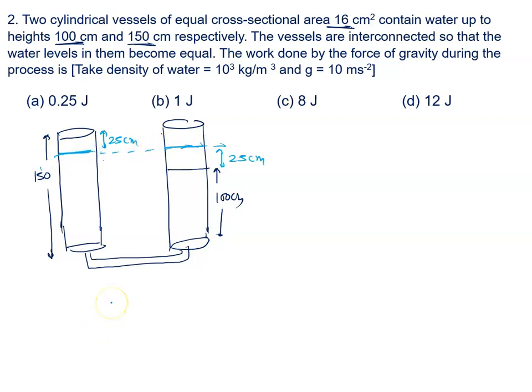Now we have to calculate the work done by the force of gravity. Gravity is doing positive work. We all know very well, gravity is doing positive work because this water was initially at 150, now it is coming to 125. Water level is downing. It means displacement is along the direction of gravity. So work done is positive.